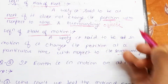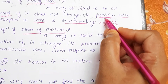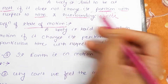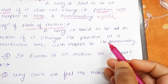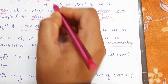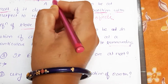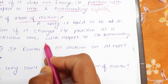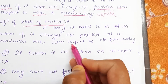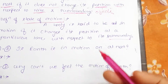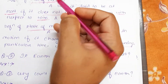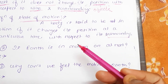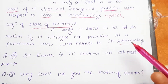Similarly, if a body changes its position at a particular time with respect to its surrounding, then it is known as state of motion. The key terms are: position, change of position, time, and surrounding. If position does not change, it is state of rest; if it changes, it is state of motion.